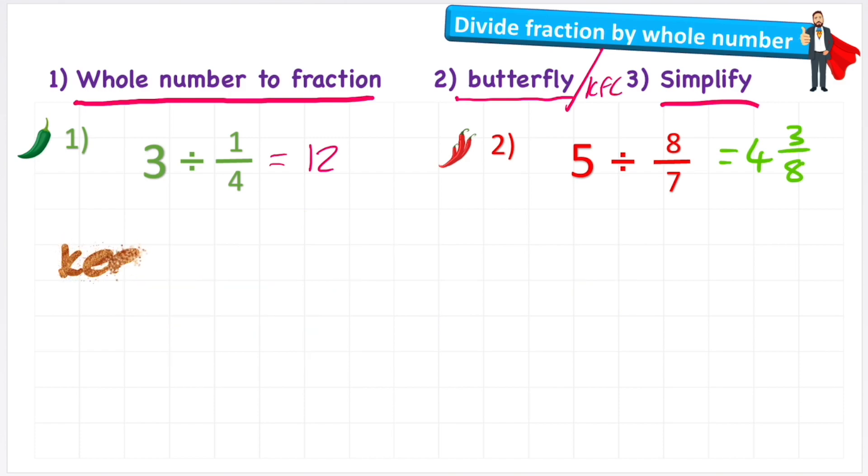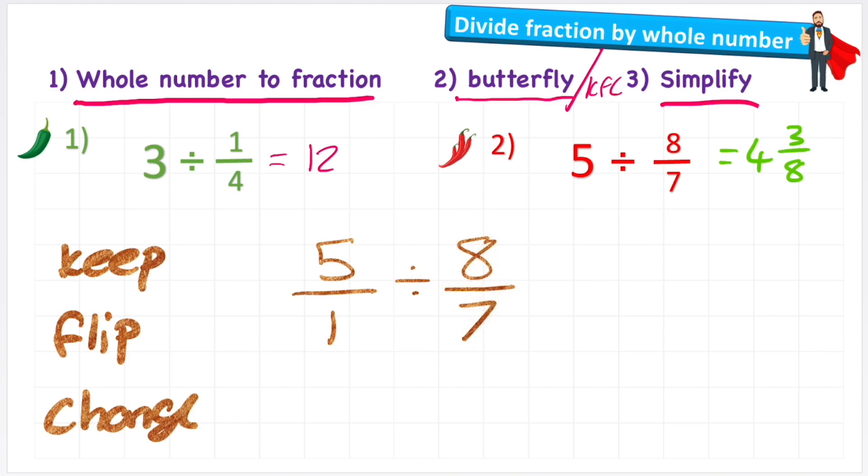Let's quickly check that with our Keep, Flip, Flip and Change, our KFC. So first things first: 5 over 1 divided by 8 over 7. First I'm going to flip my 8 over 7 and turn it into 7 over 8. Then I'm going to change the symbol from division to multiplication. And now I can simply begin.